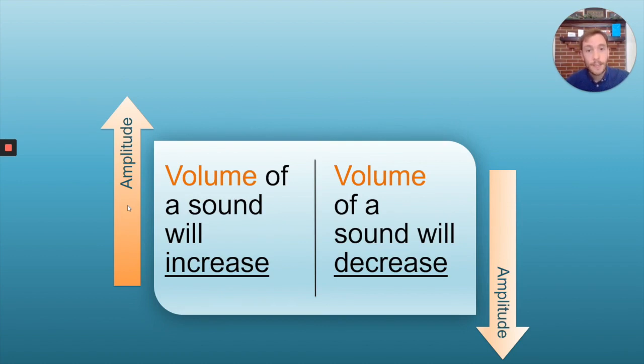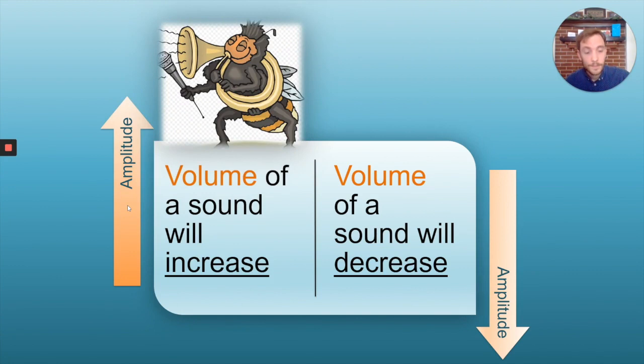The amplitude of a wave controls the loudness or the quietness of a sound. So if a wave has a lot of energy, we could say that it has a high amplitude, and as the amplitude of a wave increases, so will the volume of the sound that it produces. If a wave has a low amount of energy, then its amplitude will be decreased, and if its amplitude is decreased, the type of sound that it produces will also have a volume that's decreased.